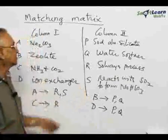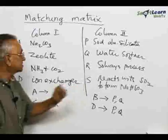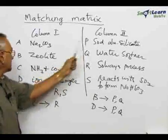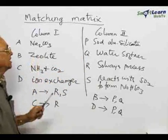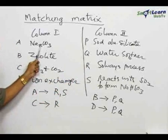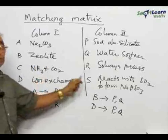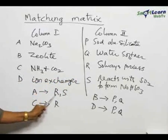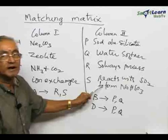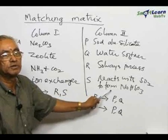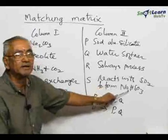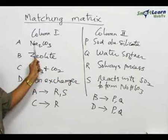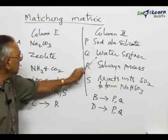Let us take up one after the other. For sodium carbonate, we find that sodium aluminum silicate does not match — so P is not the correct matching factor for A. Sodium carbonate is not used as a water softener. However, sodium carbonate is manufactured by the Solvay process, so R matches with A. Also, sodium carbonate reacts with sulphur dioxide to form sodium bisulphite (Na₂CO₃ + SO₂), which is one method of making sodium bisulphite. Therefore, A matches with R and S.